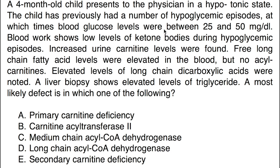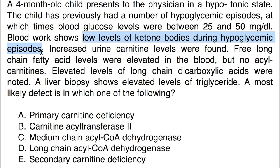Let's look at the important points in this case. This child has hypoglycemic episodes, with blood glucose between 25 to 50 milligrams per deciliter, which is clearly hypoglycemia — fasting blood glucose is normally around 70 to 99 milligrams. Looking at the blood work, there are low levels of ketone bodies during the hypoglycemic episodes. Normally during hypoglycemia, the body responds by making ketone bodies through fatty acid oxidation, so we expect ketone bodies to be elevated. Here they are low.